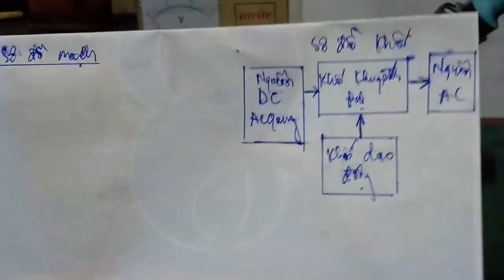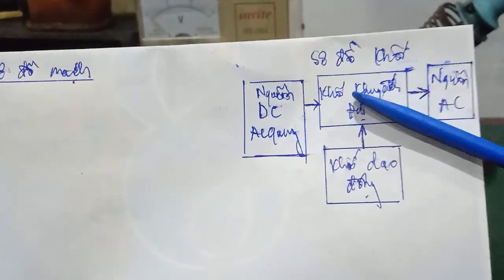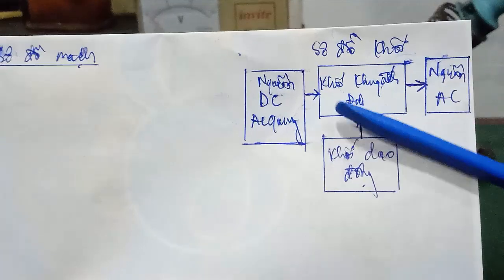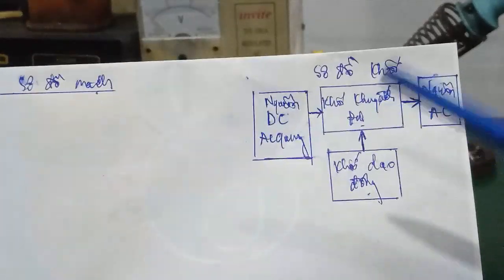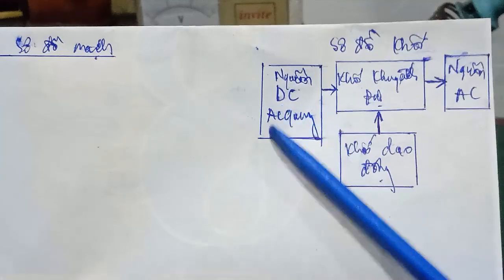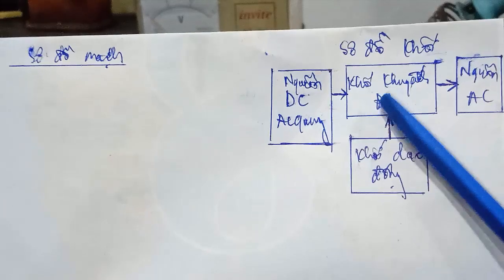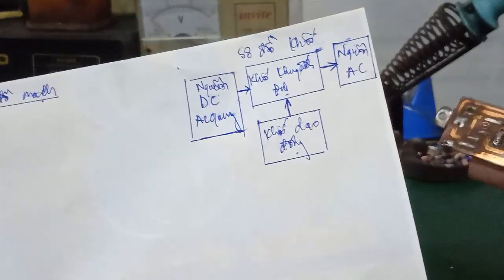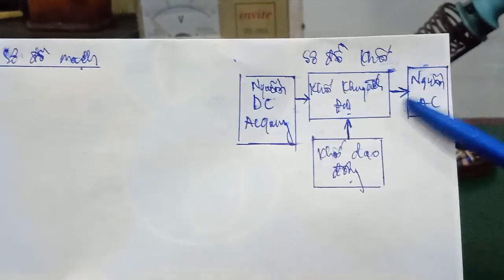Thì cái sơ đồ khối của nó: cái mạch nghịch lưu chuyển đổi từ DC 1 chiều sang AC xoay chiều, nó gồm cái nguồn ắc quy ngõ vào. Đây là bình ắc quy khô, các bạn dùng ắc quy khô hay ắc quy nước cũng được. Sau đó nó sẽ đưa qua một cái khối khuếch đại. Khuếch đại ở đây mình dùng con transistor công suất H1061, nó chuyển đổi thành cái nguồn AC. Trước nhất nó sẽ có một cái khối dao động, rồi đưa qua khối khuếch đại.